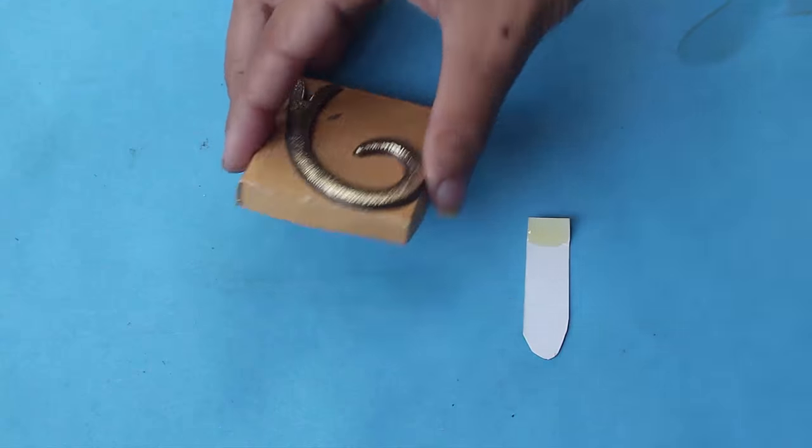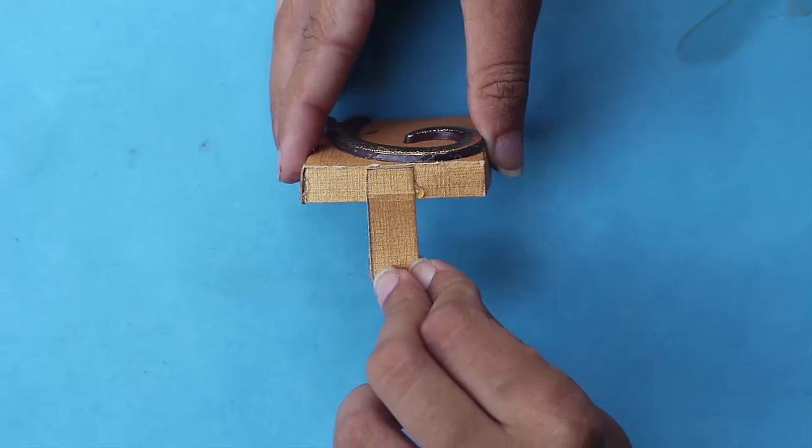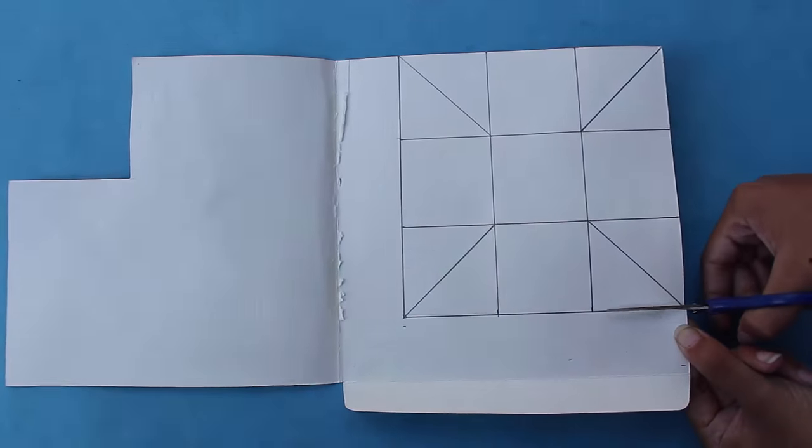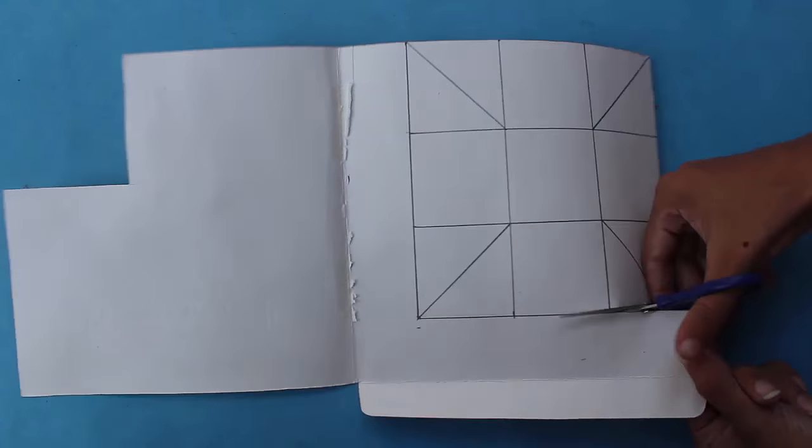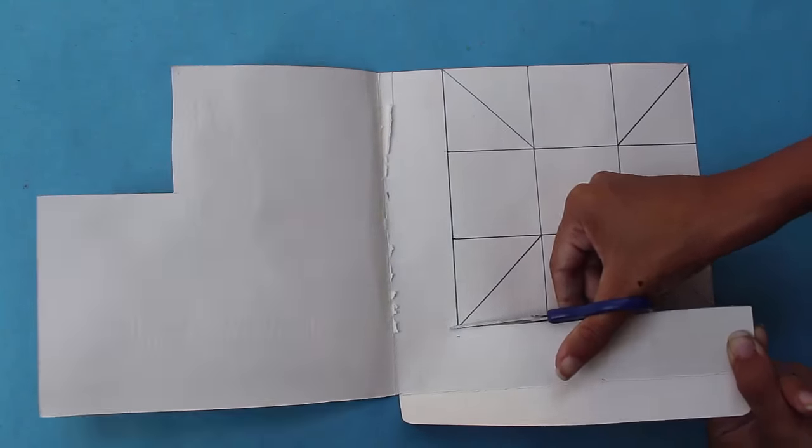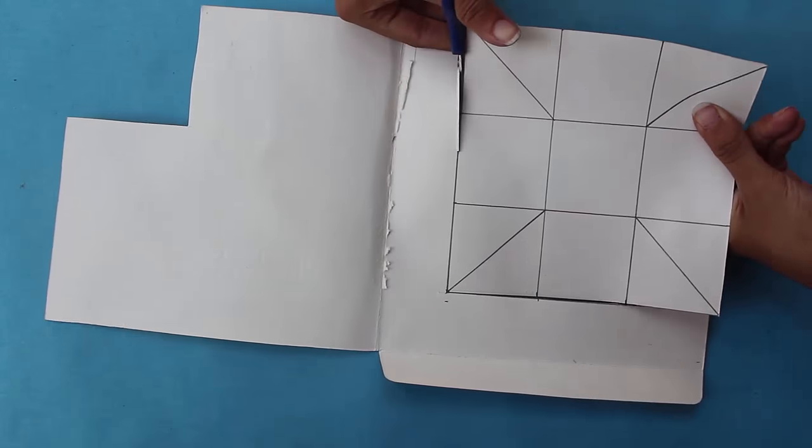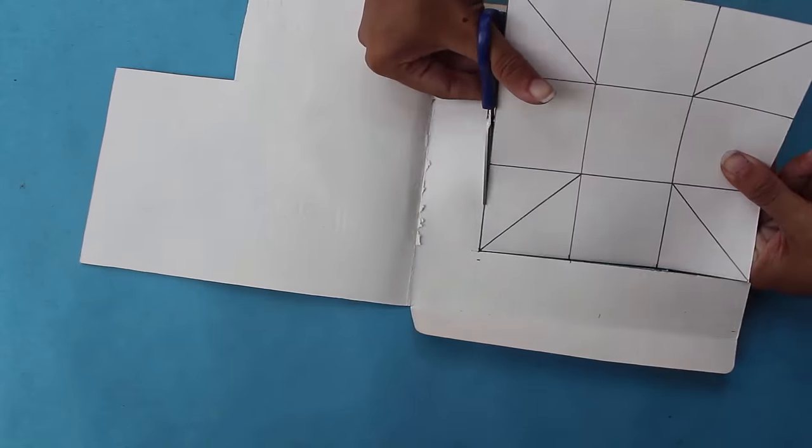For making the box, you will require a square of 15 centimeters which has to be divided into 9 little squares of 5 centimeters. The ratio of these small squares with respect to the larger one is 1:3.